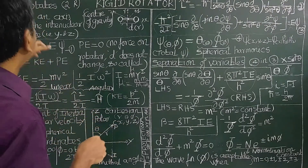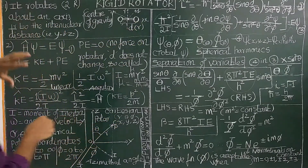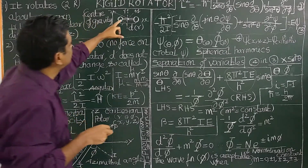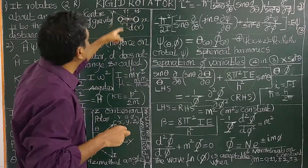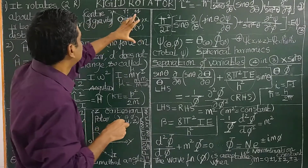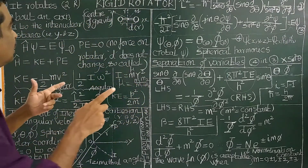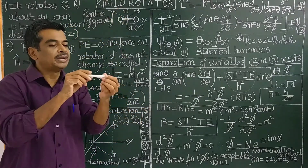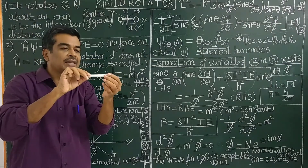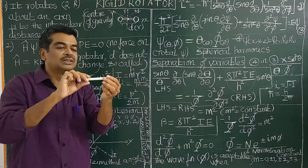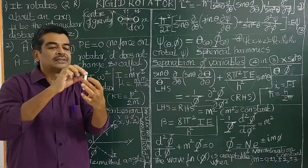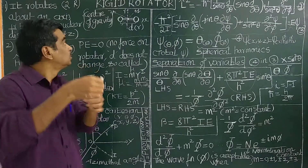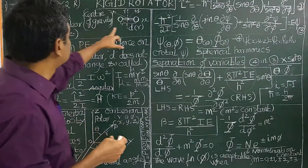There are two rotational degrees of freedom because the diatomic molecule rotates about an axis perpendicular to the internuclear axis. Therefore, there are two kinds of rotation. Rotation about the Z axis — the molecule rotates along the internuclear axis — but this rotation is not considered. Only rotation about the perpendicular axes is considered, giving two rotational degrees of freedom.